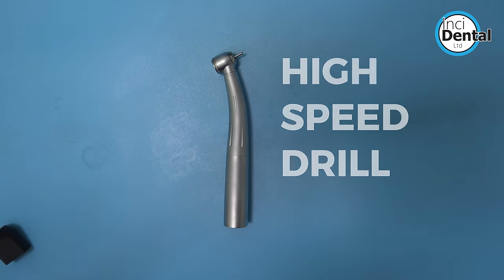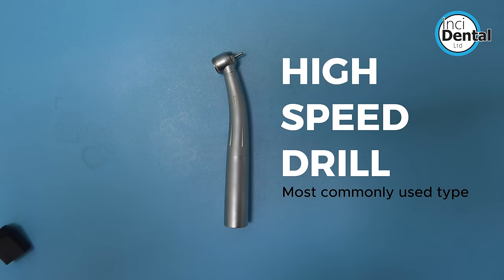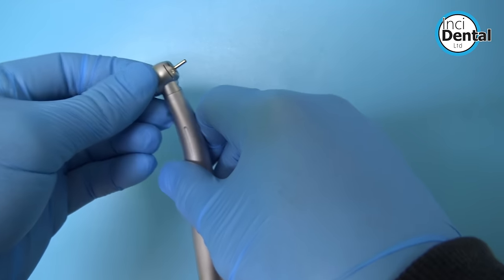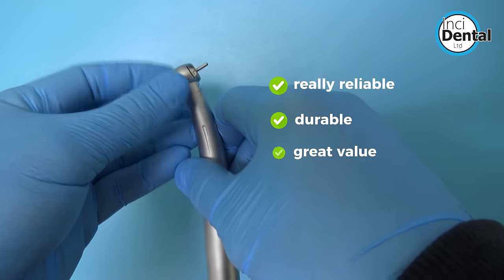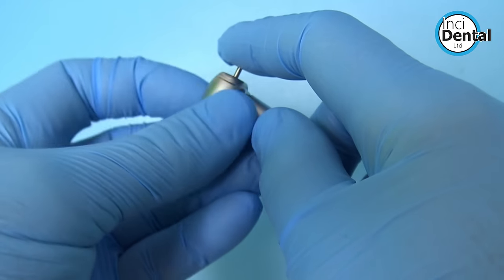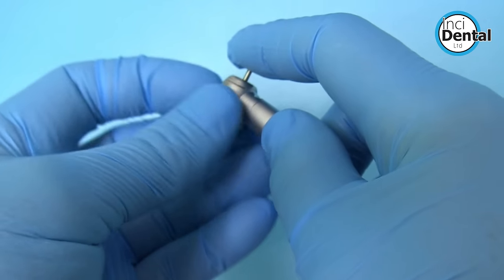So first we're going to look at a high-speed drill, perhaps the most commonly used type. This is our incidental own brand unit, really reliable, durable, and as always great value. When you look inside the unit you can clearly see why they're also known as air turbines.